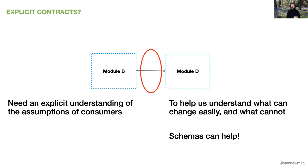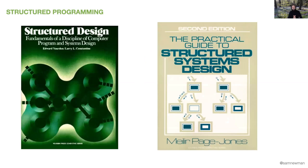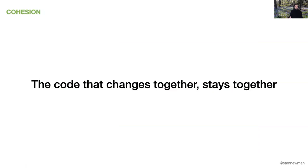Coming back to prior work, we look at the work done around structured programming — several works by Edward Yourdon and Larry Constantine, and other books by Page Jones, both from the Yourdon Press. These books are actually surprisingly hard to get hold of nowadays; a secondhand copy of Structured Design will set you back about 80 quid. This is where we get terms like coupling and cohesion, which come up quite a bit in the context of microservices.